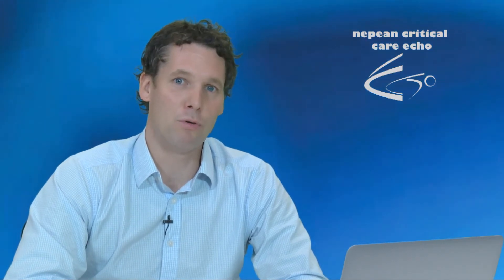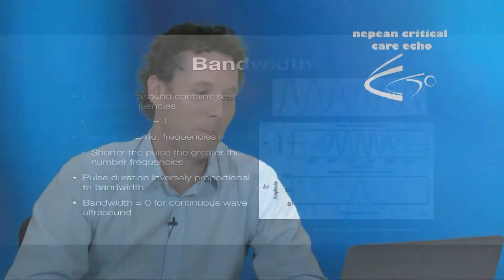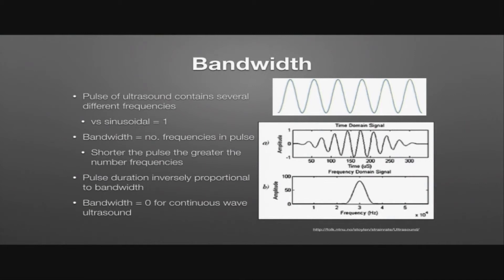Bandwidth is an important concept because with pulsed ultrasound we are going to be getting a range of frequencies, and bandwidth is a way to describe that range. If you have continuous ultrasound, you have a sinusoidal pressure-time relationship operating at only a single frequency. When you send out a pulse, you actually get a range of frequencies sent out. The shorter the pulse, the greater the number of frequencies contained in it.